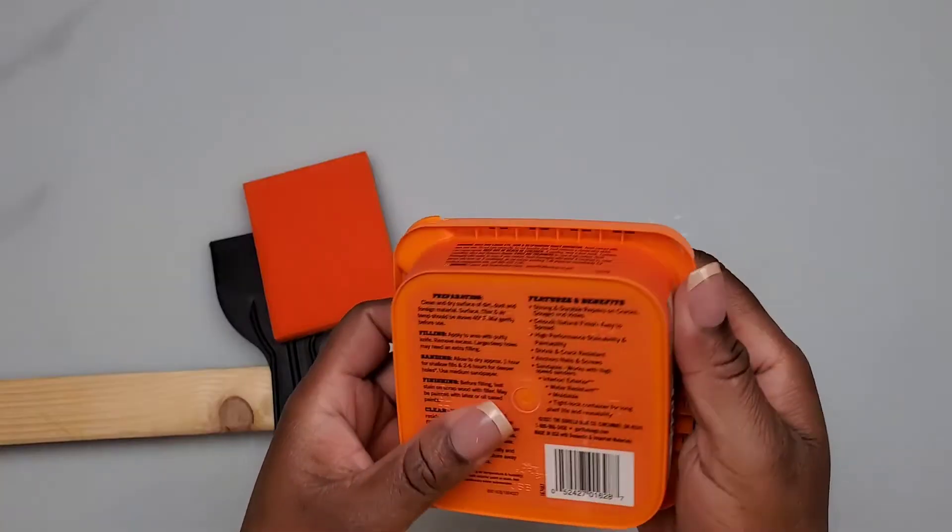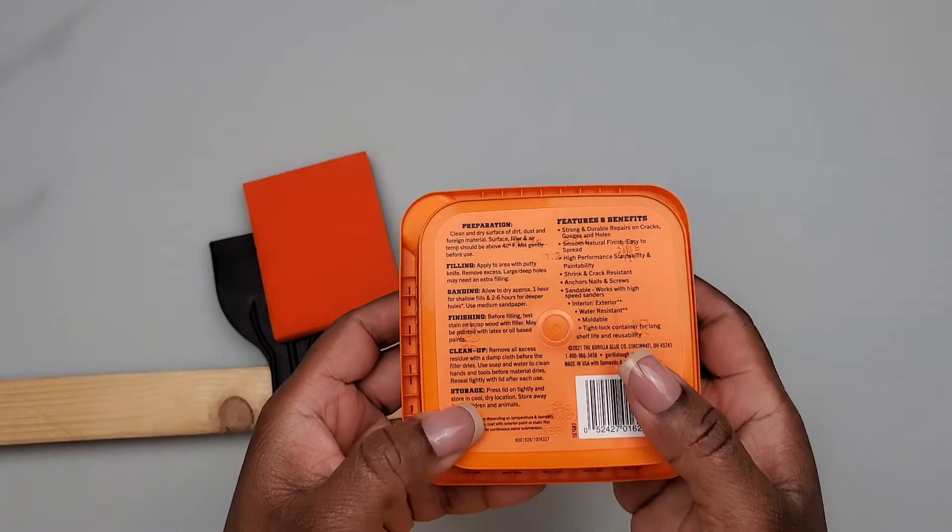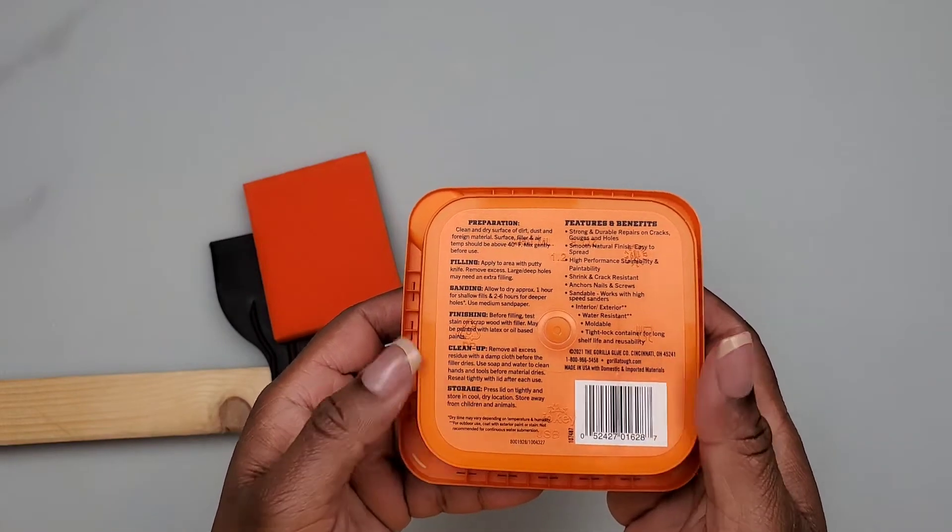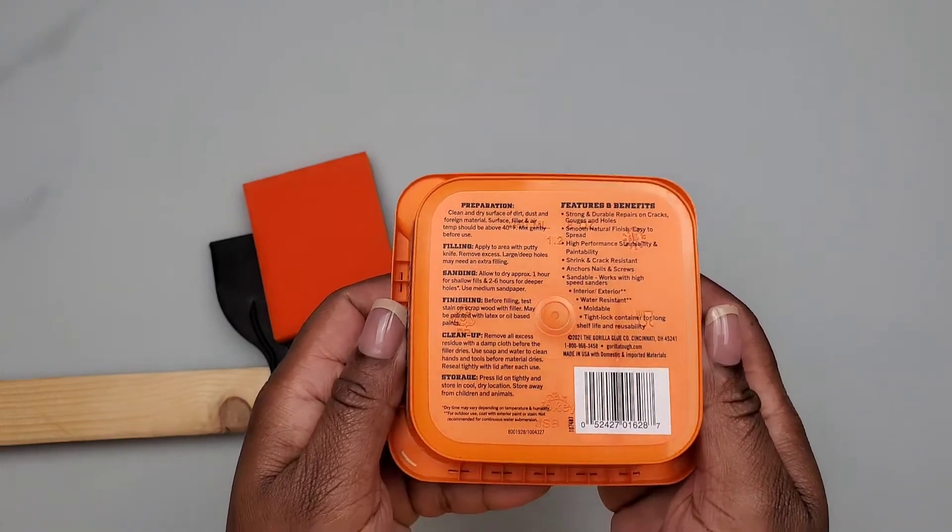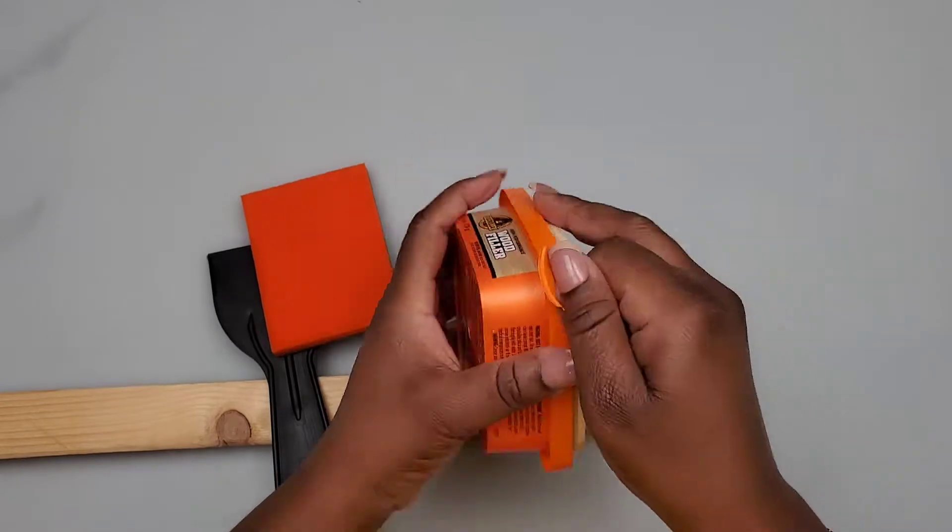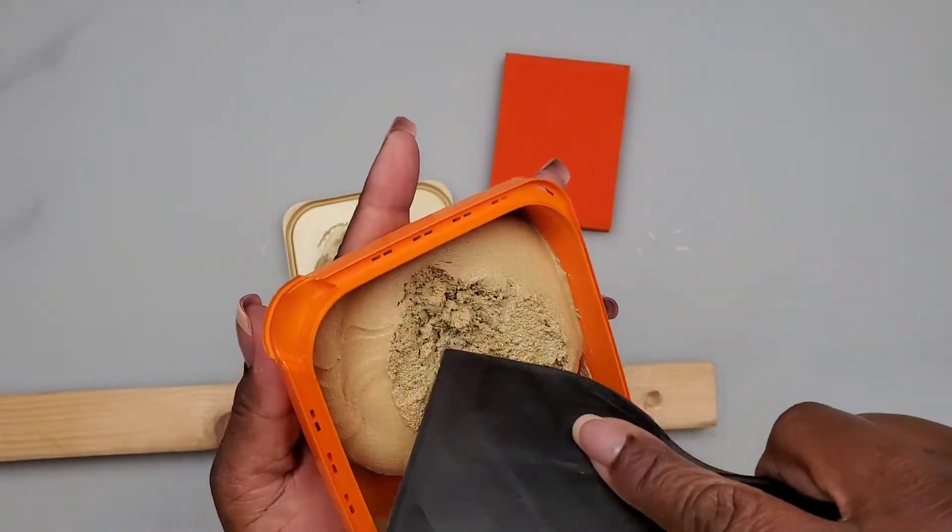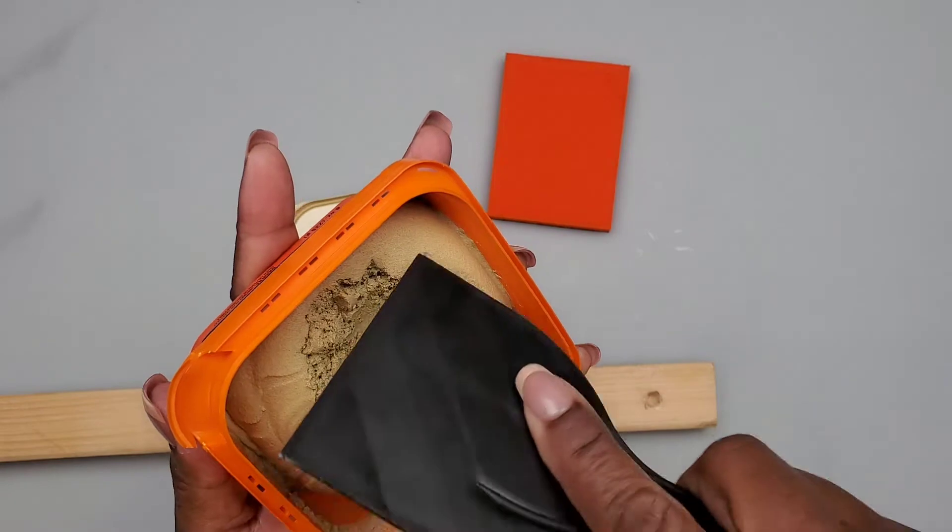This is the 8 ounce tub and here's the back with some information and directions. You can pause the video if you'd like to read it. This is the texture - it's a little bit grainy, a little bit dry.